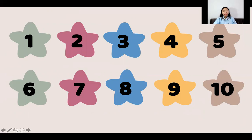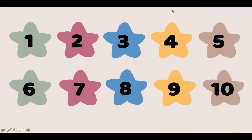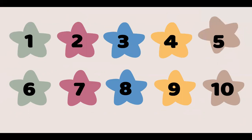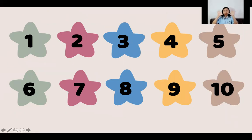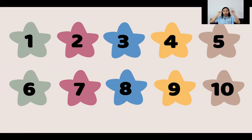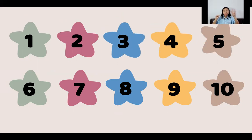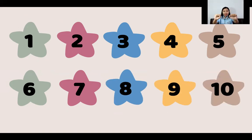Let's look at our numbers first. Let's count together, everybody: 1, 2, 3, 4, 5, 6, 7, 8, 9, 10. Okay, use your fingers — show me your fingers! Let's count again. Ready? 1, 2, 3, 4, 5, 6, 7, 8, 9, 10. Okay, 10 fingers!